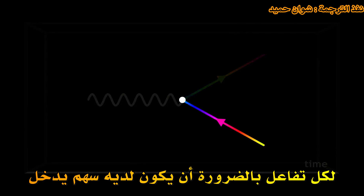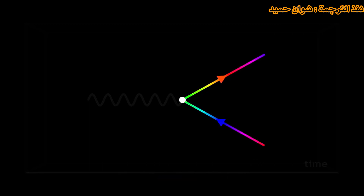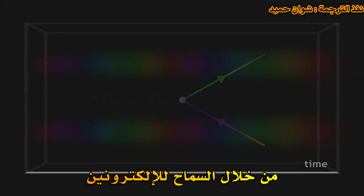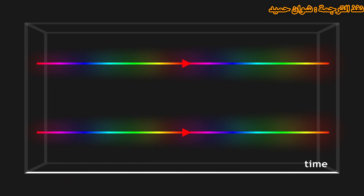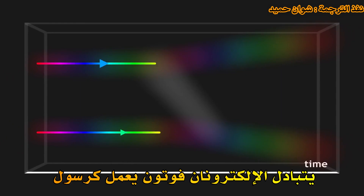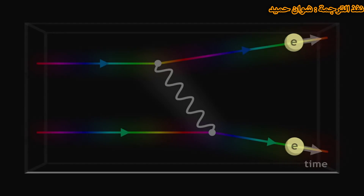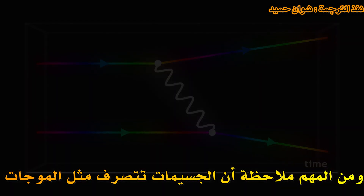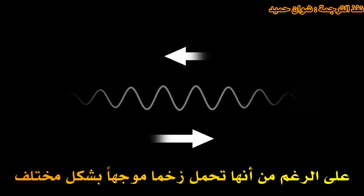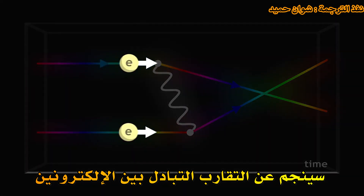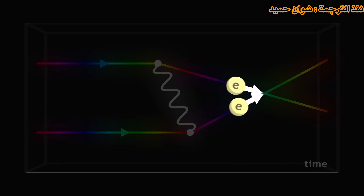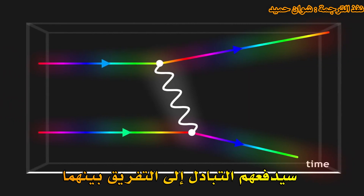Each interaction necessarily has an arrow that enters and another that leaves the vertex. By allowing our two electrons to interact with these kinds of vertices, we can then imagine a whole variety of different scenarios. In the simplest scenario, the two electrons continue in a straight line. In another, more interesting scenario, the two electrons exchange a photon, which acts as a messenger carrying part of the momentum of the first electron to the second electron. It is important to note that particles behave like waves — they can be exchanged along one direction even though they carry a momentum which is oriented differently. That way, in some scenarios the exchange will bring the two electrons closer, and in other scenarios the exchange will push them apart.